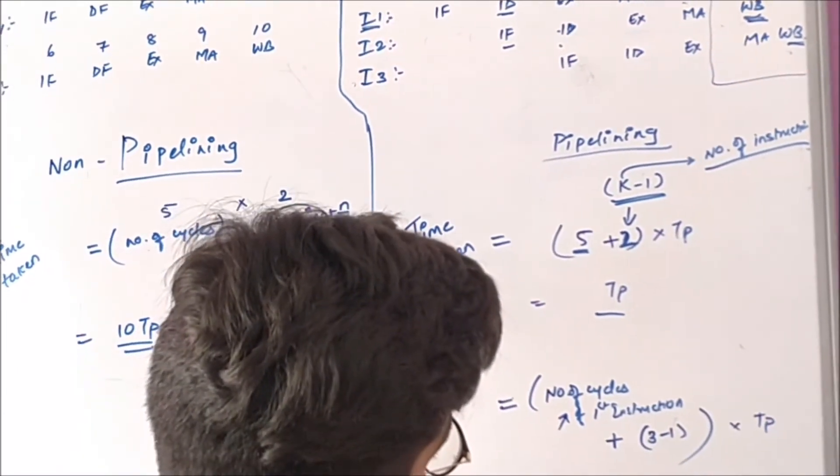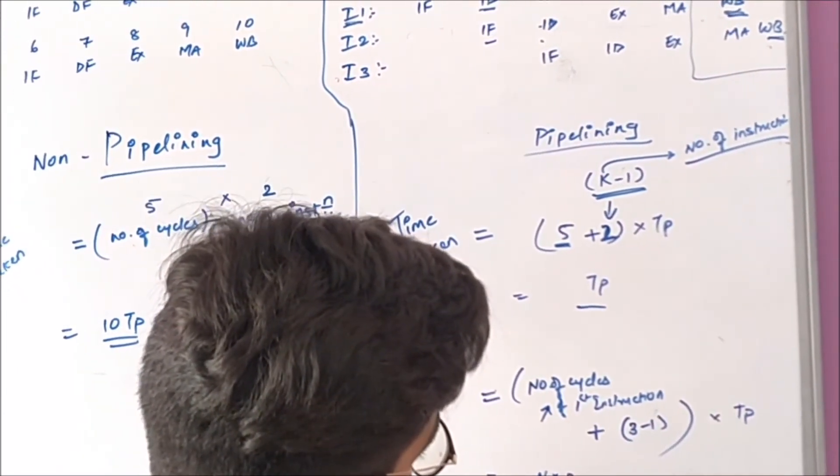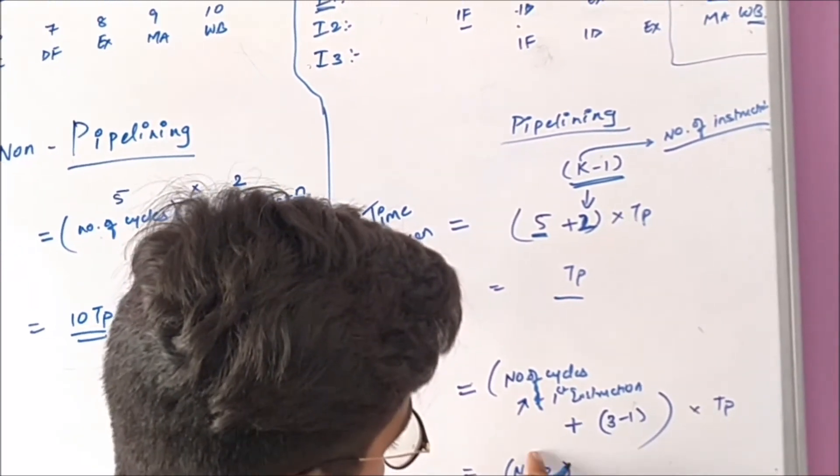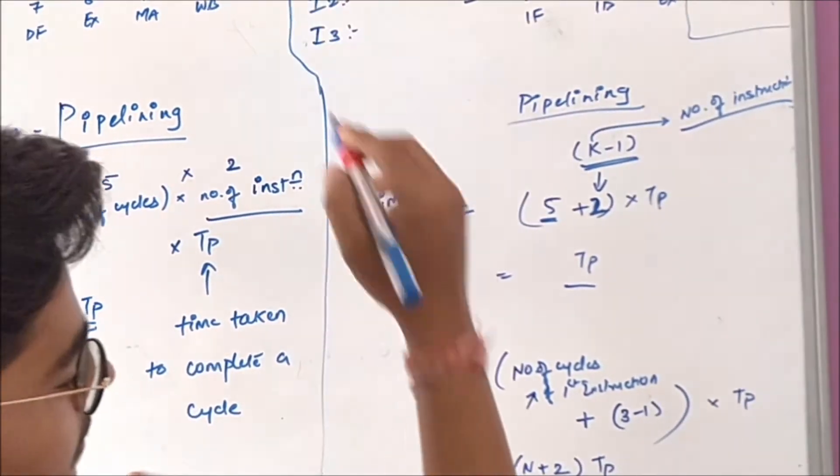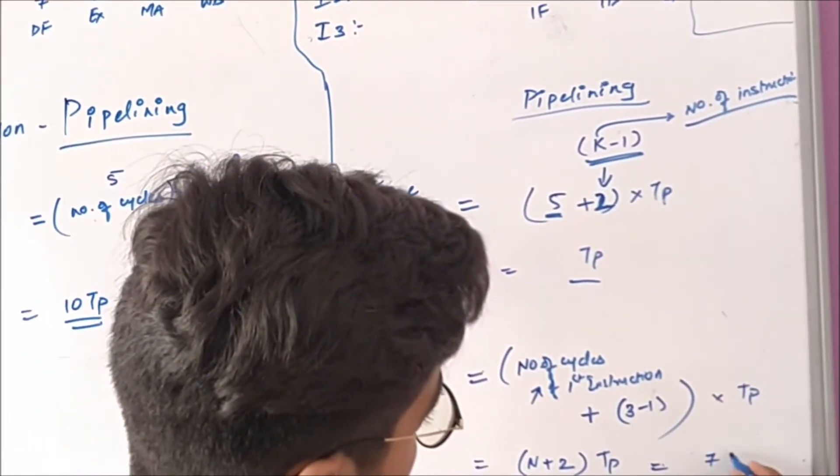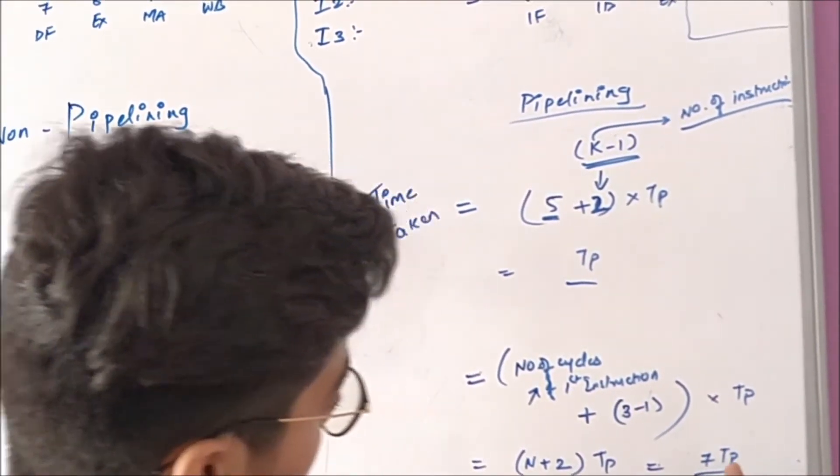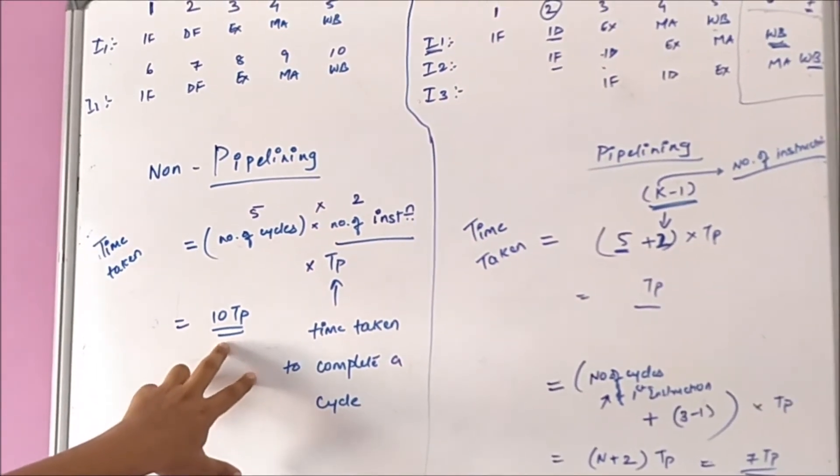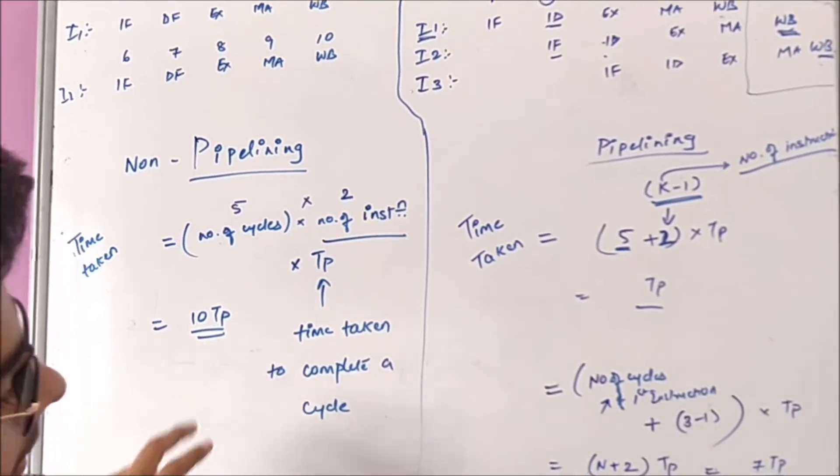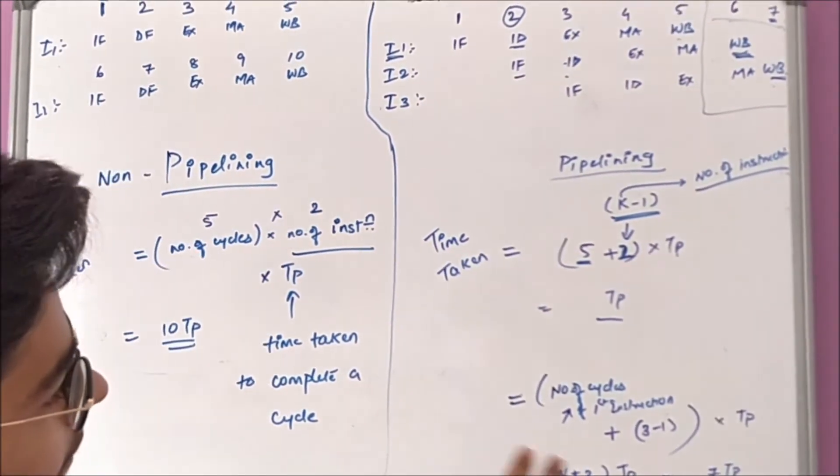It will be N into TP plus TP. N is the number of cycles it takes for the first instruction. So it will be seven TP. As you can compare that, without pipelining, it takes ten TP and with pipelining, it takes seven TP only. This is the advantage of pipelining.